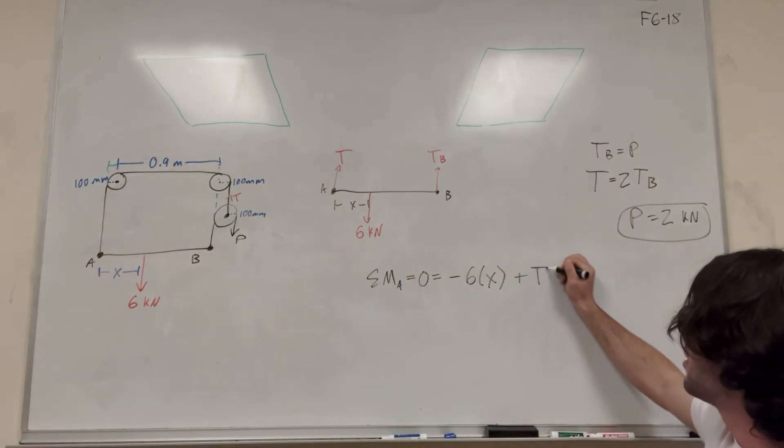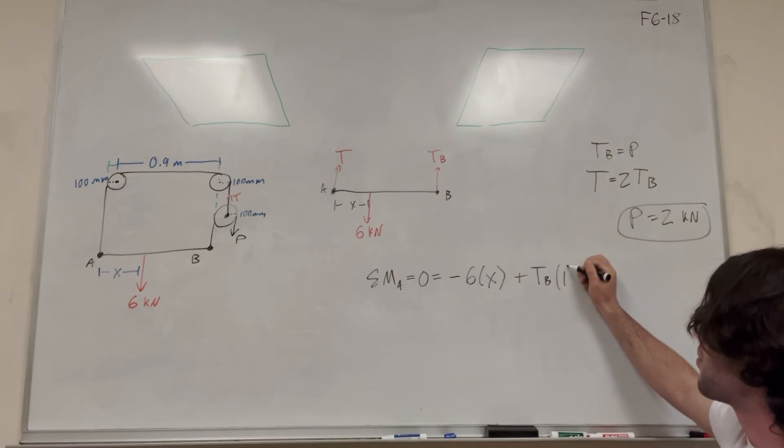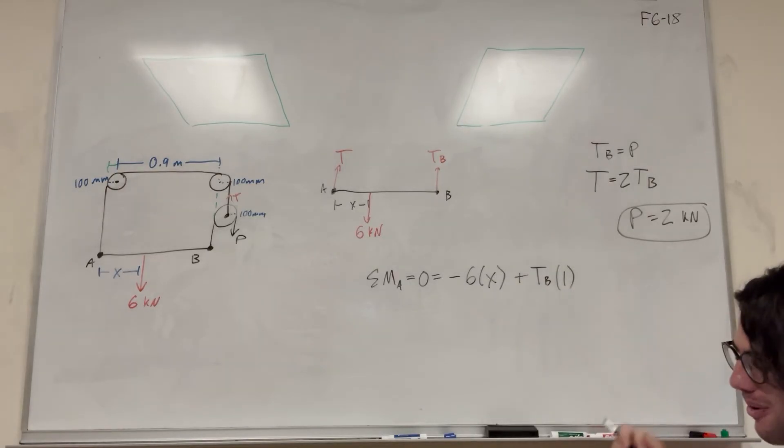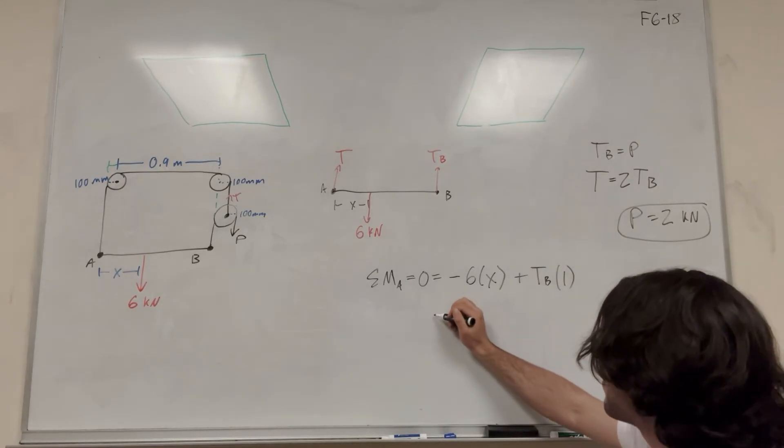So when we're taking tension of B, we're going to take it times the distance of one meter. That's the total distance there. So then, of course, all we need to do is solve for x, so let's do that over.